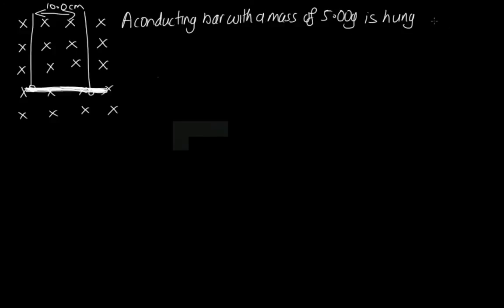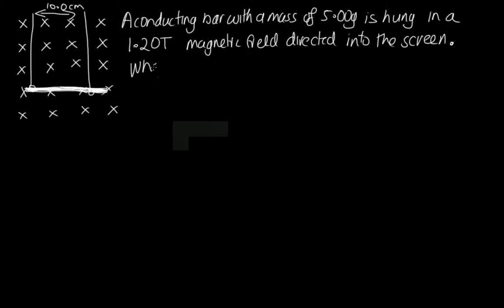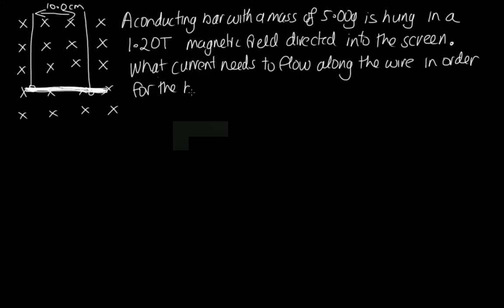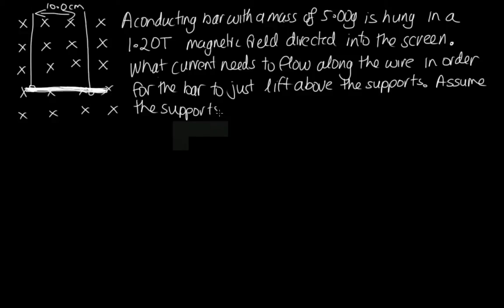So the question is, a conducting bar with a mass of 5.00 grams is hung in a 1.20 tesla magnetic field directed into the screen. What current needs to flow along the wire in order for the bar to just lift above the supports? Assume the supports are 10 centimeters apart.